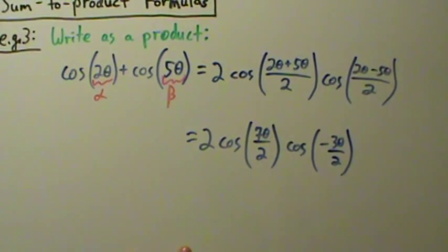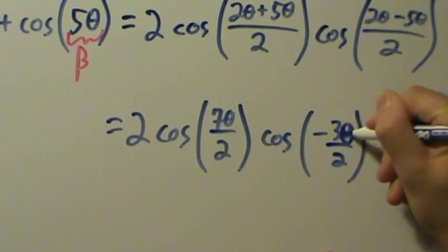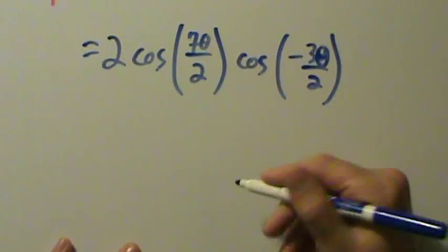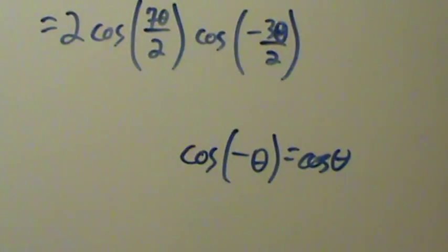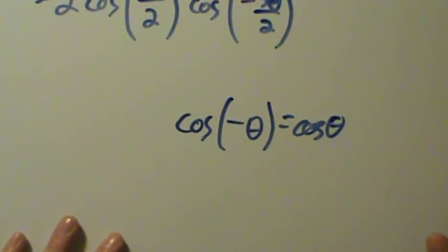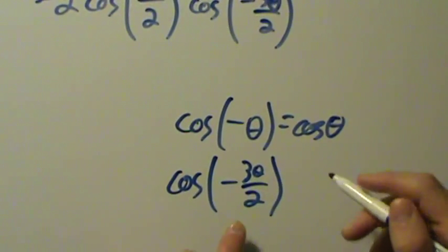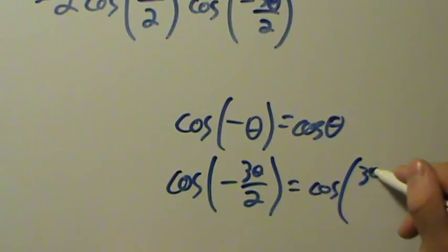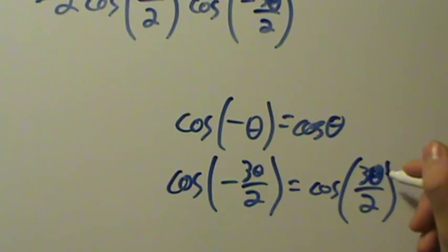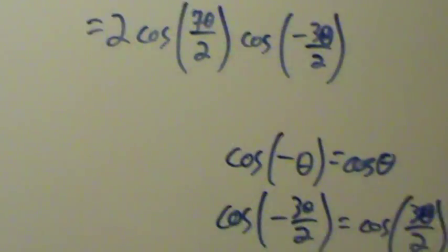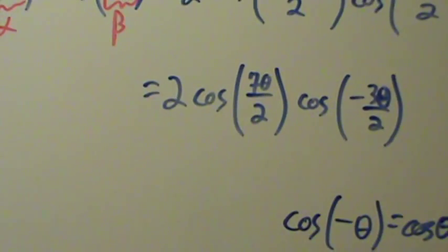The fractions can be simplified — we have seven theta over two and negative three theta over two. One nice thing we can do: remember cosine is an even function, so cosine of negative theta equals cosine of theta. This is true for anything inside the cosine, even something more complicated like negative three theta over two. So cosine of negative three theta over two is just cosine of three theta over two.